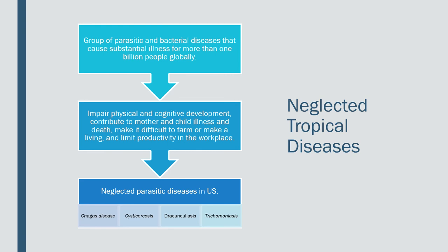Onchocerciasis, also known as river blindness, is caused by larvae from a particular type of worm. The worms embed themselves in the skin, causing severe itching and lesions — sometimes referred to as lizard or leopard skin. They can get into the blood and migrate to the eyes, which is what causes the blindness. 37 million people are infected, and 99% of those people live in Africa.